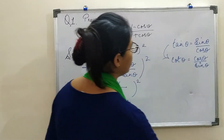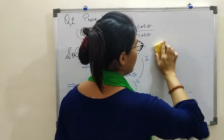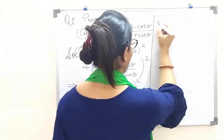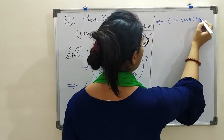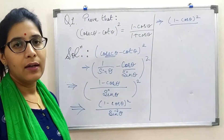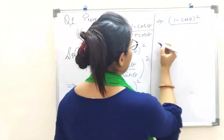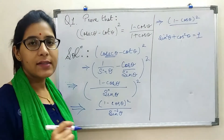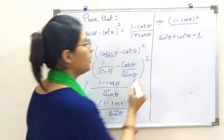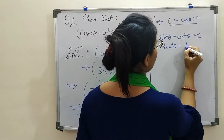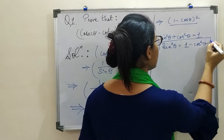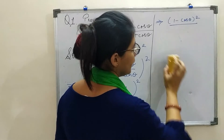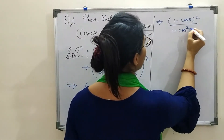Moving to the next step, I will use an identity in the denominator. We have a known identity: sin squared theta plus cos squared theta equals 1. Using this identity, when I need the value of sin squared theta, I can find it — cos squared theta moves to the minus side, giving us sin squared theta equals 1 minus cos squared theta. I will place this in the denominator, so the denominator becomes 1 minus cos squared theta.